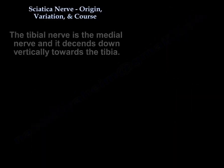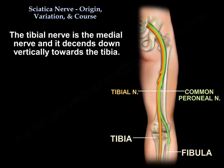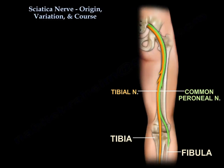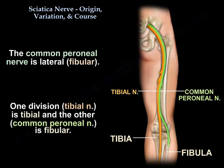The tibial nerve is the medial nerve and it descends vertically towards the tibia. The common peroneal nerve is lateral — it goes laterally towards the fibula. So if one division is tibial, the other is fibular or lateral, which is the common peroneal nerve.